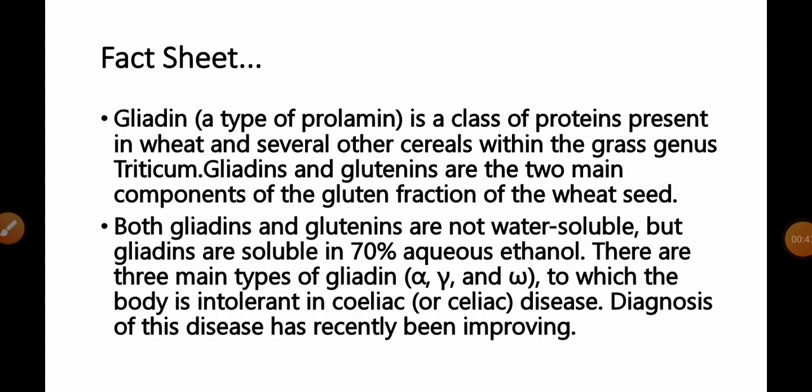Fact available for this question: Gliadine is a class of protein present in wheat and several other cereals within the grass genus triticum. Gliadine and glutinins are the two main components of the gluten fractions of the wheat seed. Talking about their solubility or chemical characteristics, both gliadine and glutinins are water insoluble but gliadines are soluble in 70% aqueous ethanol or alcohol. There are three main types of gliadine to which the body is intolerant in celiac disease.